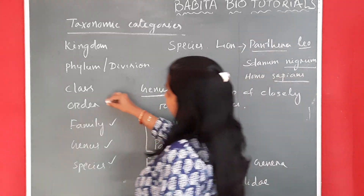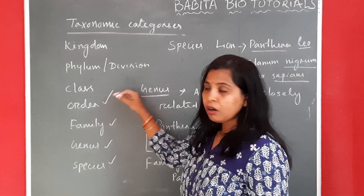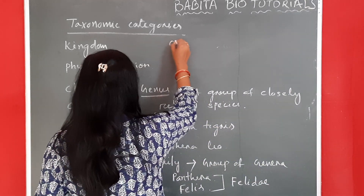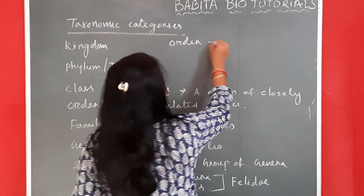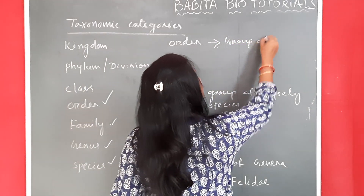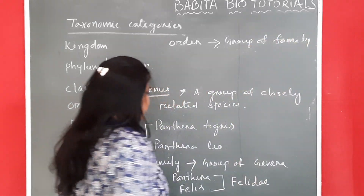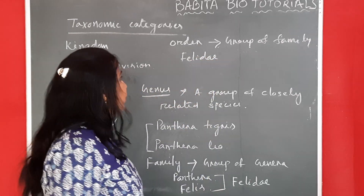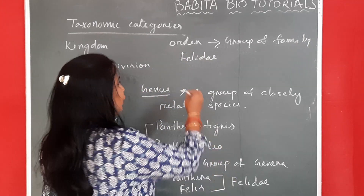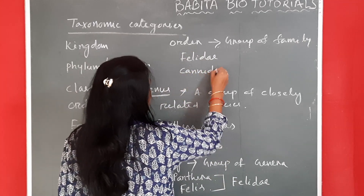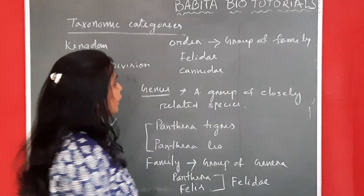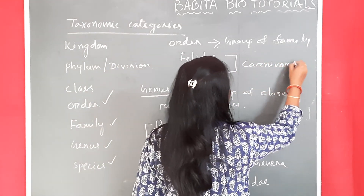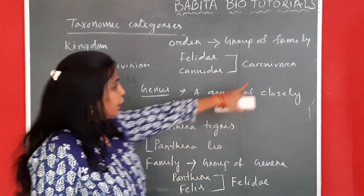Next, we will go for the order. Closely related families form the order. The group of families with the same characters belong to one order. Felidae is one family — that is your cat family. Dog family is known as Canidae. Both Felidae and Canidae belong to one order — that is your Carnivora. Carnivora is the order.